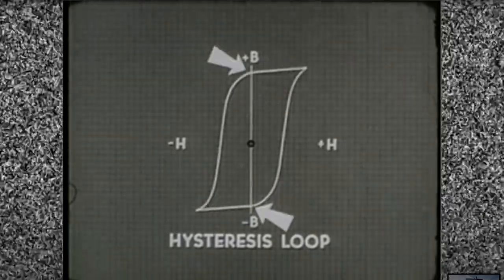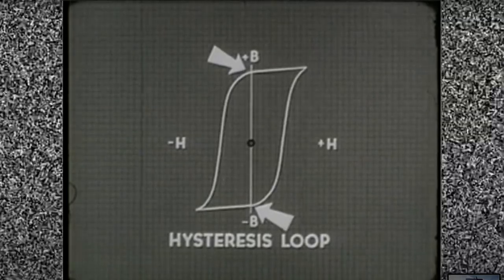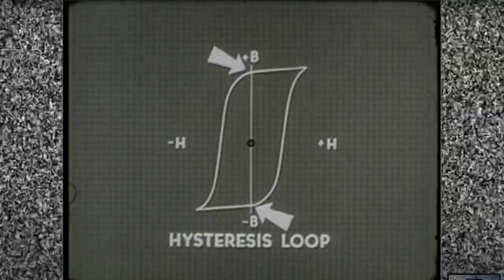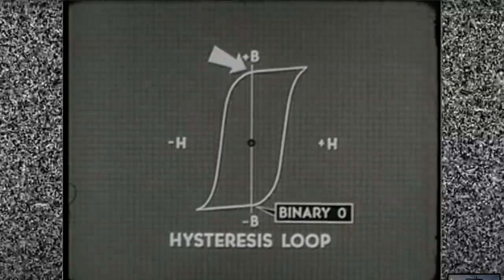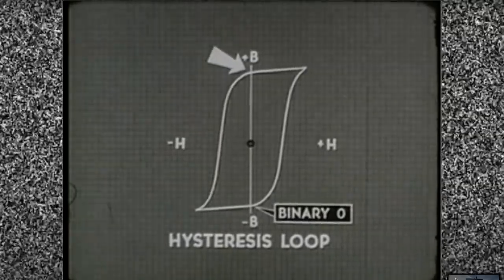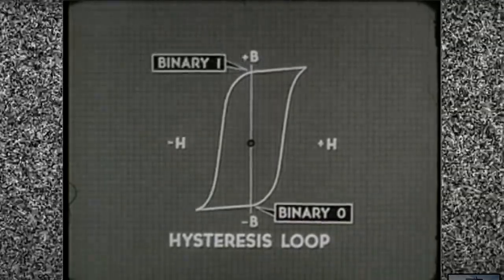Rectangular loop. High residual magnetism. A greater amount of force needed. If a core with a rectangular hysteresis loop is in the binary zero state, we're going to have to apply a substantial pulse of non-dot current in order to set it to binary one. A lesser pulse just won't make the switch.